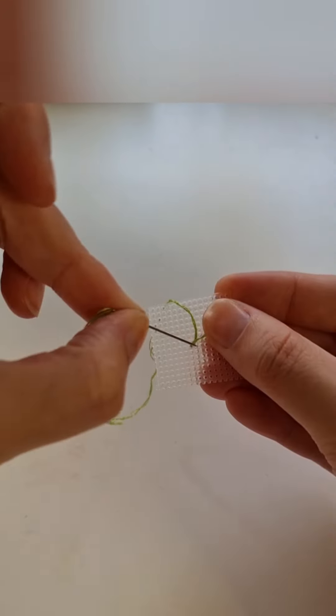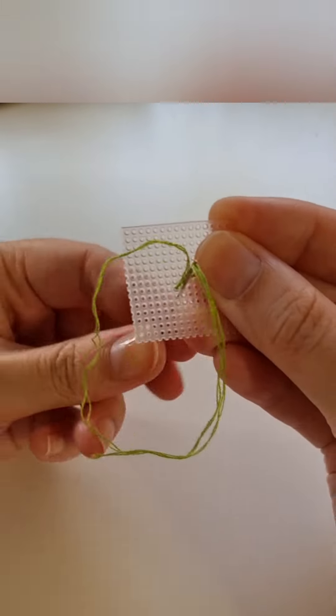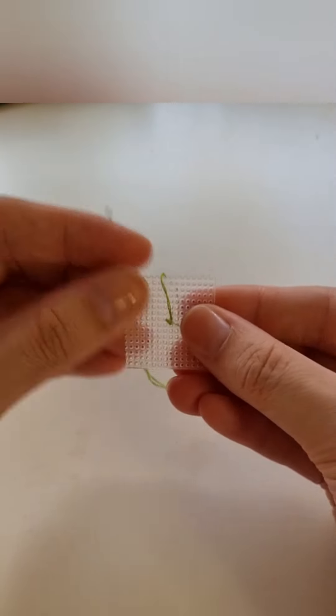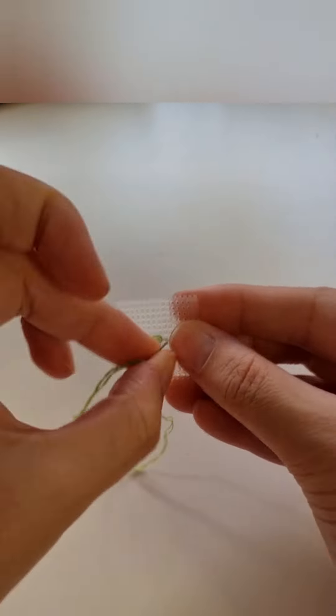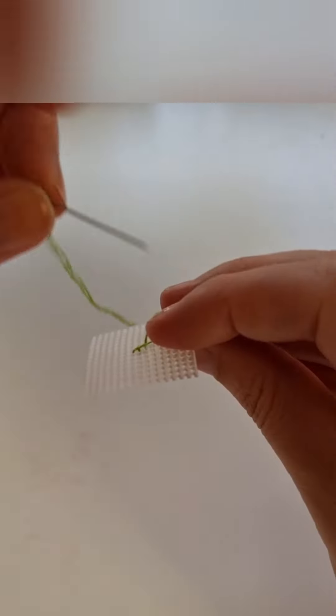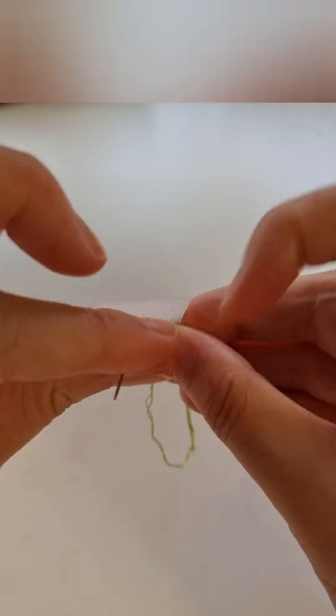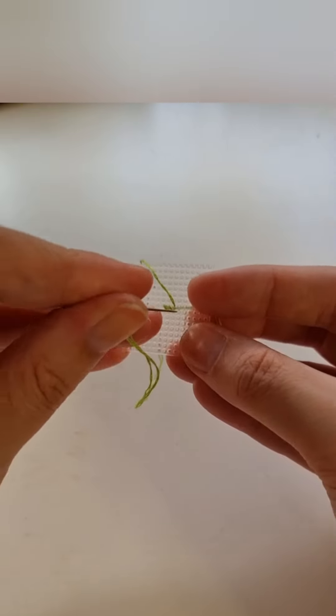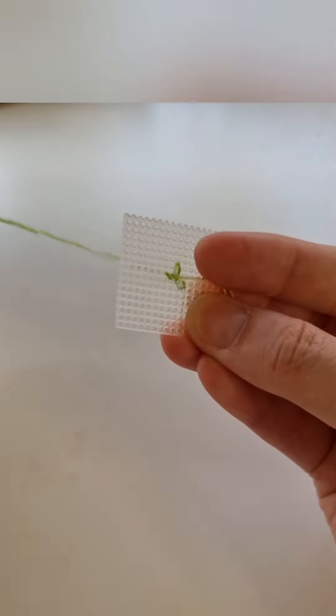When I come back to the back I'm going directly up to catch the tail of my thread. Flipping over to the front again I'm stitching down and to the right. As I continue stitching I'm making sure that I'm catching the tail at the back and continuing in the same direction with each of my half stitches.